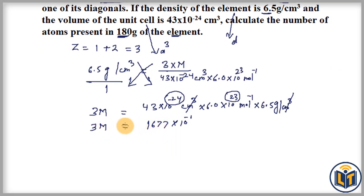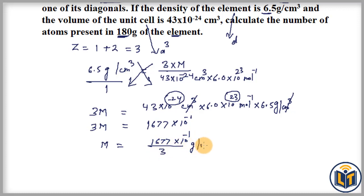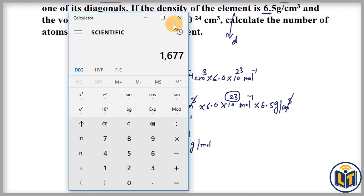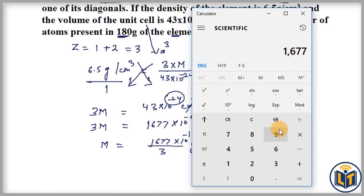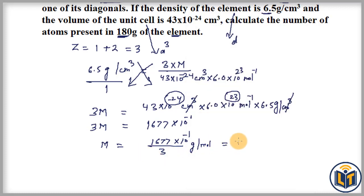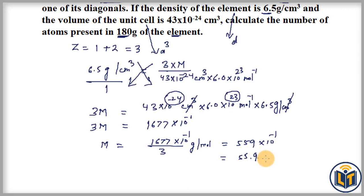Dividing 1677 by 3 gives 559, so M = 559 × 10⁻¹ gram per mole, which can also be written as 55.9 gram per mole. This is the atomic mass of the element.